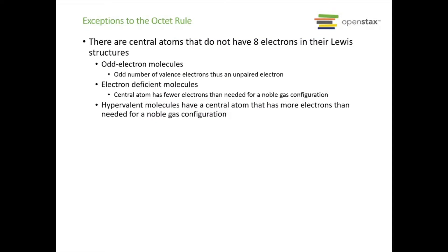There are always exceptions in chemistry — we do have octet rule exceptions. Some central atoms do not have eight electrons in their Lewis structures. They can be odd-electron molecules, which literally have an odd number of valence electrons resulting in an unpaired electron. We can have electron-deficient molecules where the central atom has fewer electrons than needed for a noble gas configuration. And we have hypervalent molecules where the central atom has more electrons than needed for a noble gas configuration.